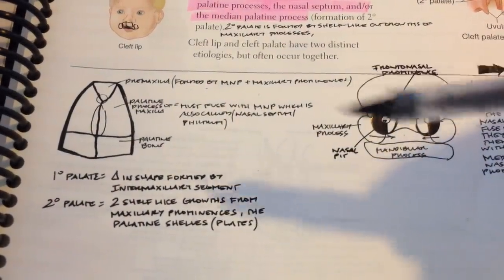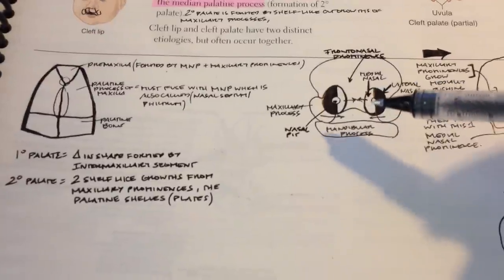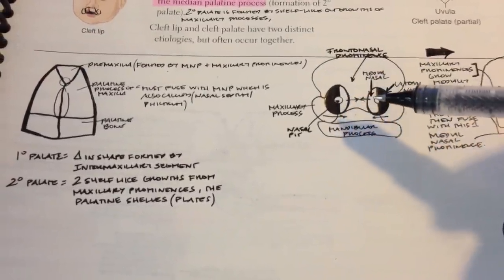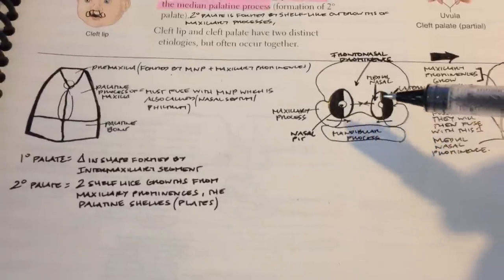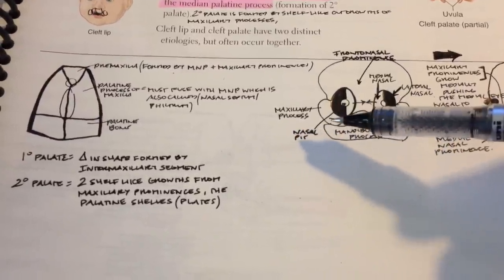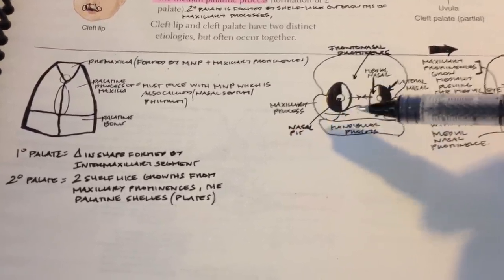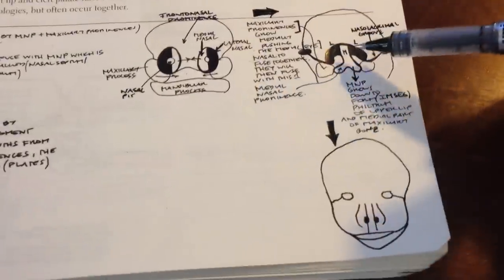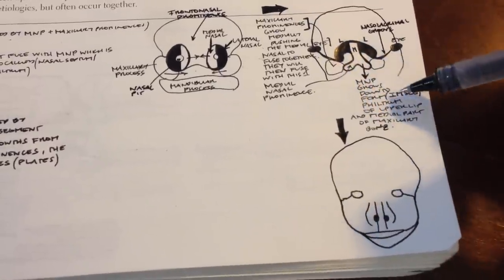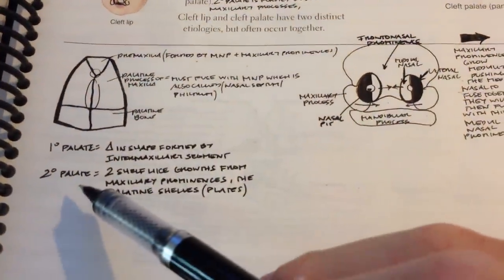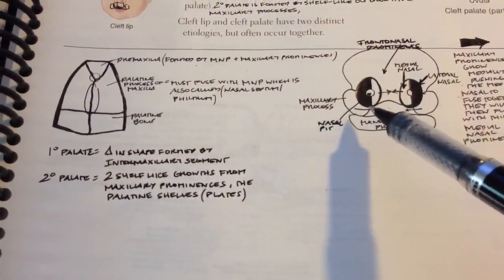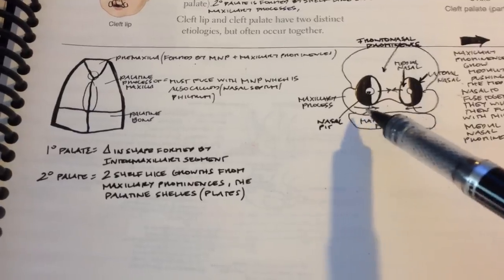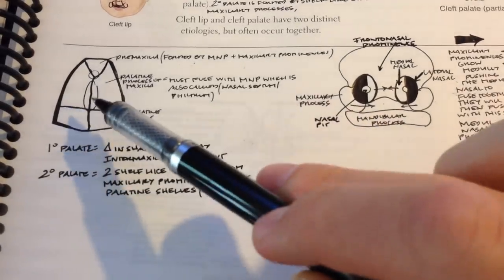In quick review: the medial nasal prominences are pushed together by the maxillary processes' growth and movement toward the midline, giving the intermaxillary segment, which forms the philtrum. The secondary palate is a shelf-like projection — a growth of the maxillary processes — that is supposed to fuse in the midline.